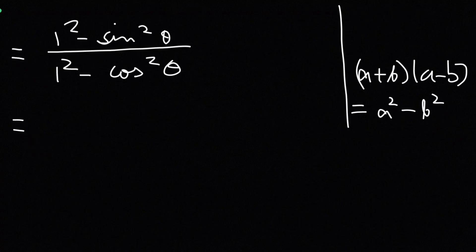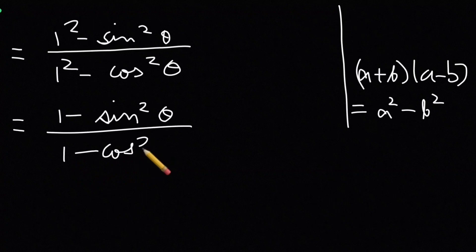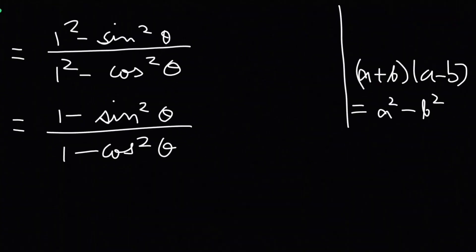So this equals 1 minus sin²θ upon 1 minus cos²θ. Now, humne teen sides ki values nikaali thi — do sides to given thi, aur hypotenuse humne nikaali thi. Ab hum us ko use kar sakte hai, aur sin aur cos mein value put kar sakte hai.